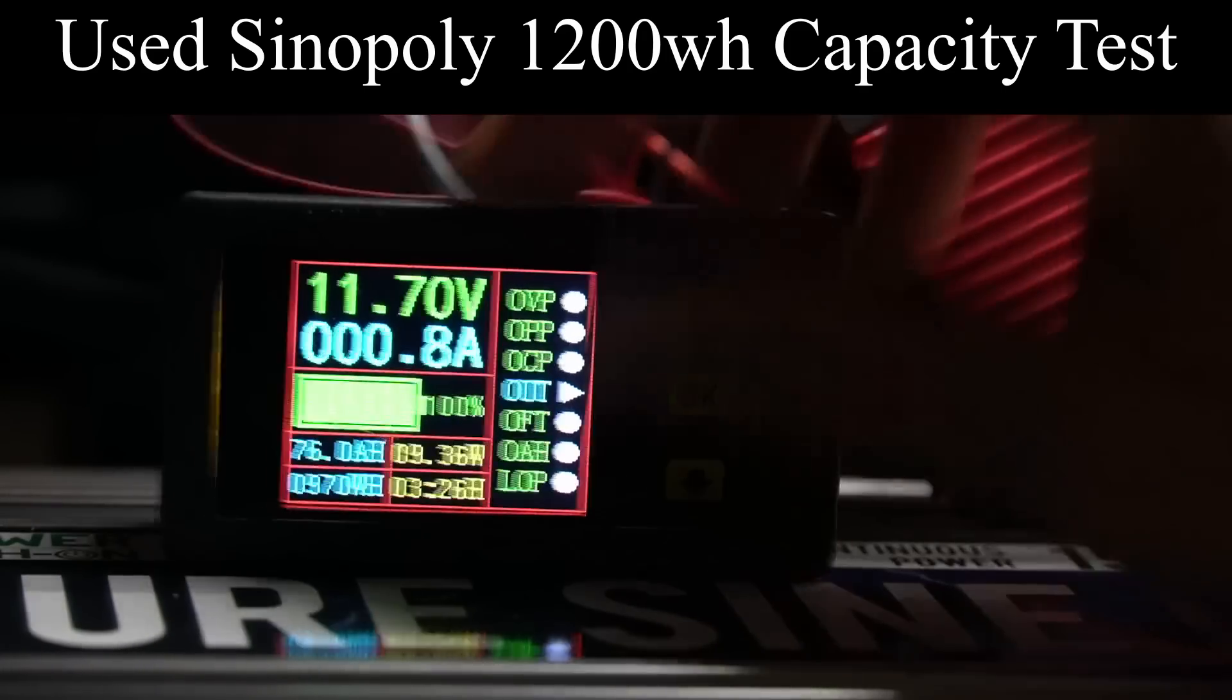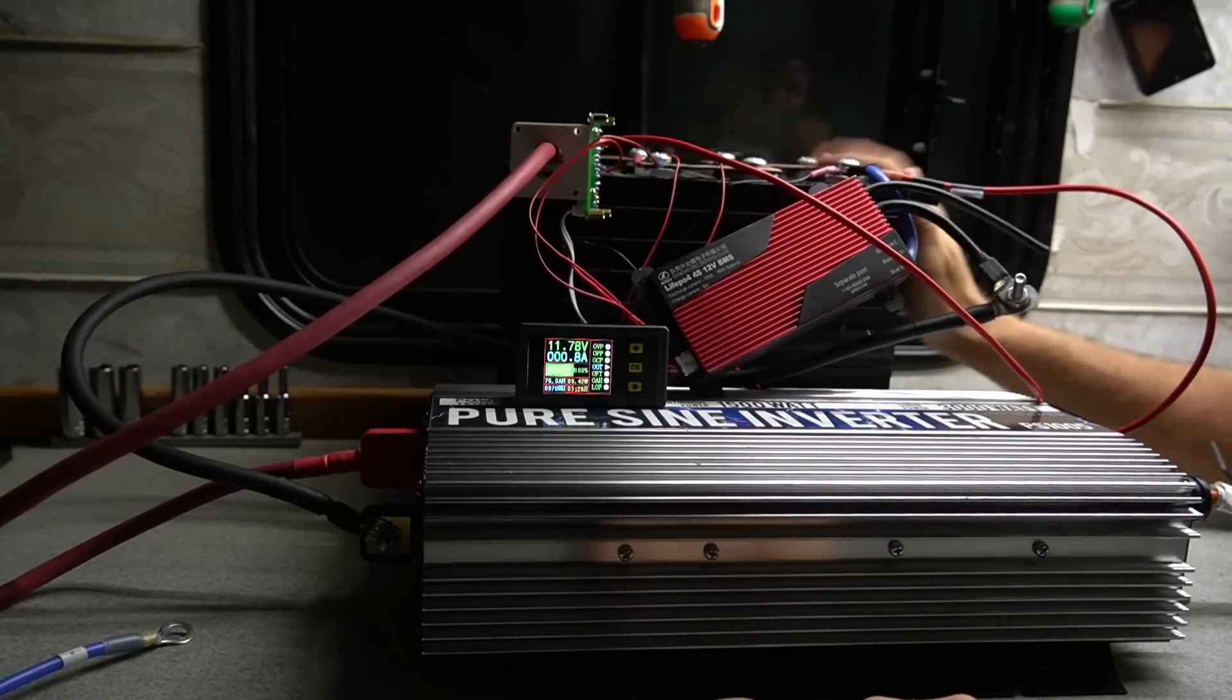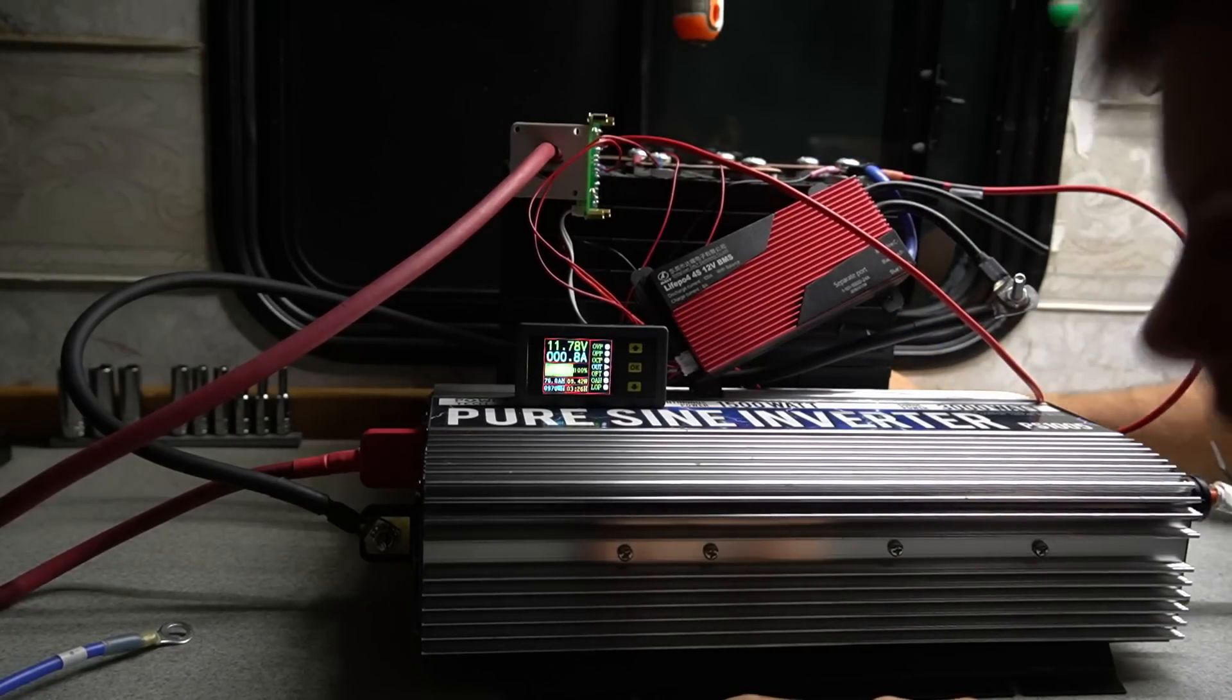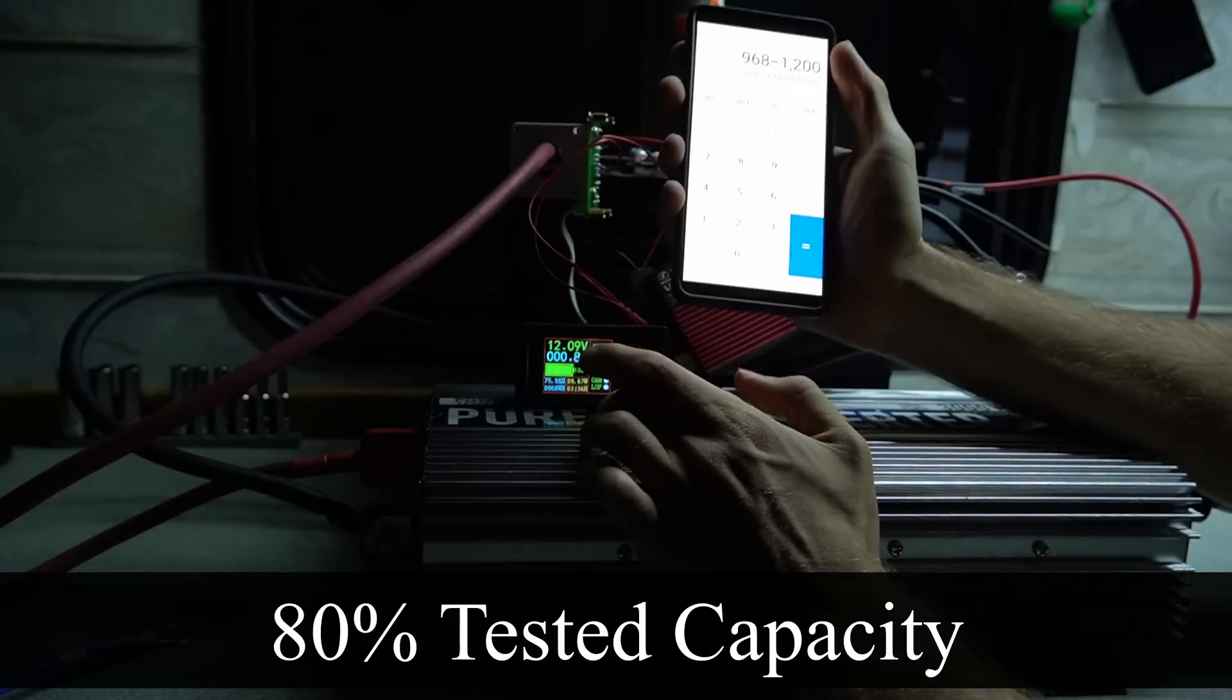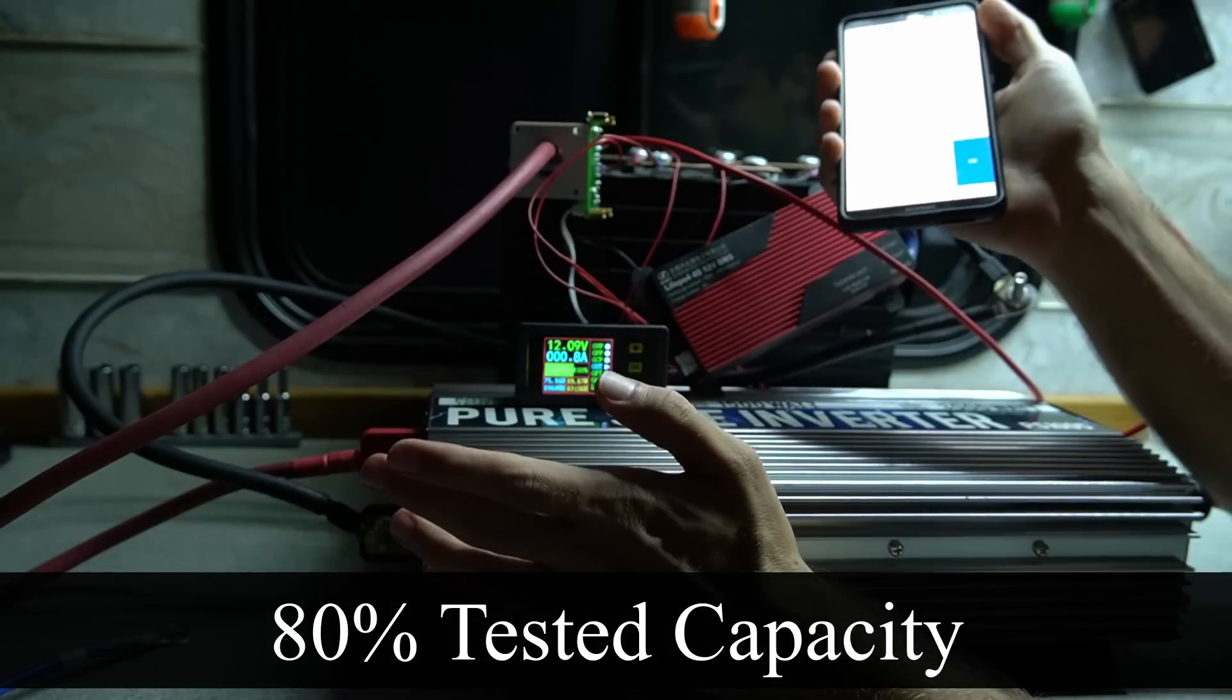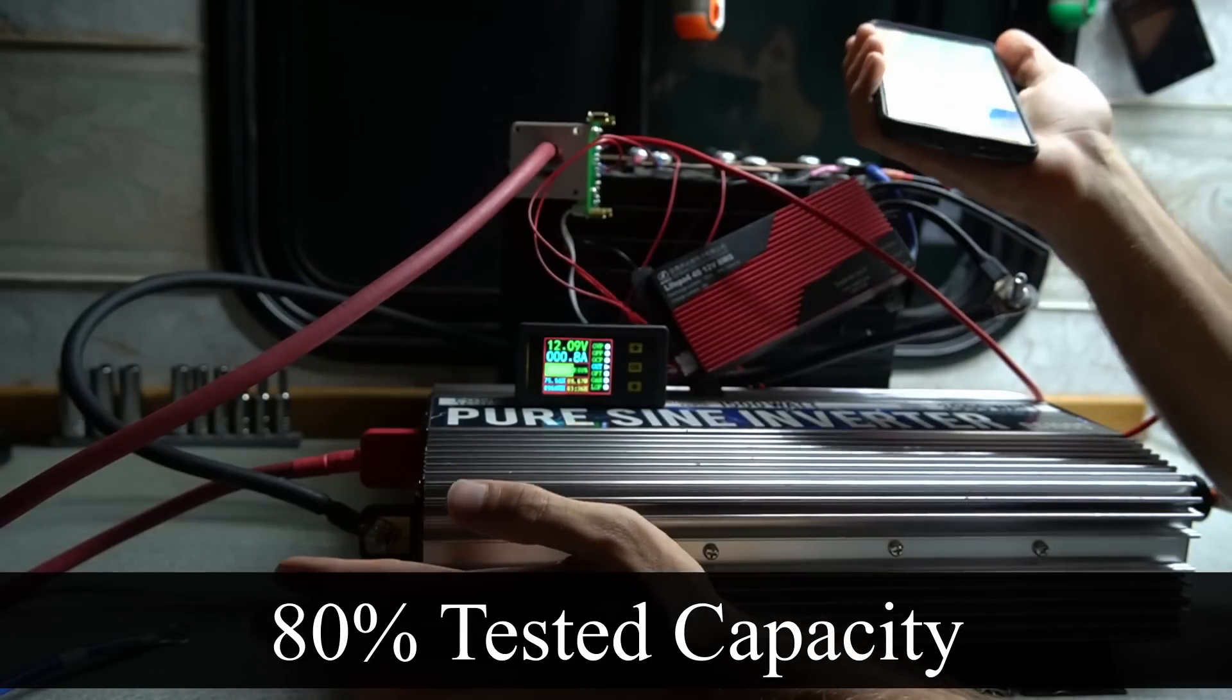970 watt hours. That's so funny. Oh my God. This poor battery has been through so much. I have no idea what that is. So 968 divided by 1,200 we get 80%. So it did 80% capacity which is the standard for most used cell batteries. So it's good. It's not great. It's cool though.